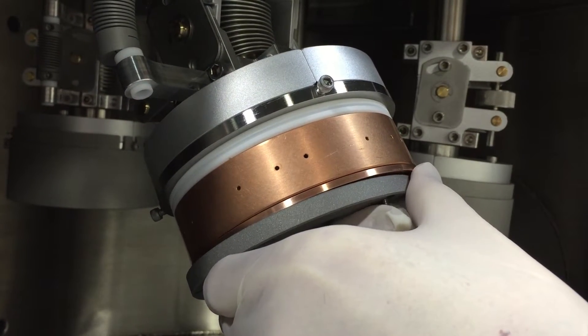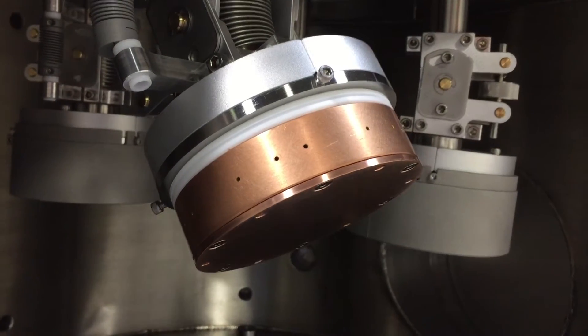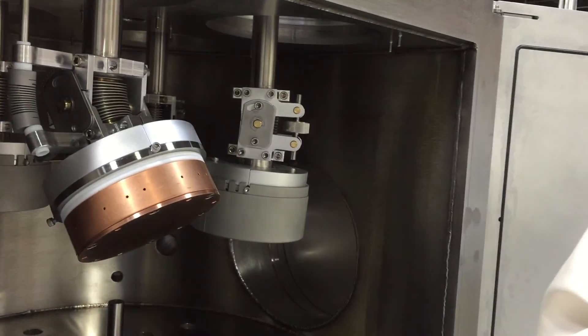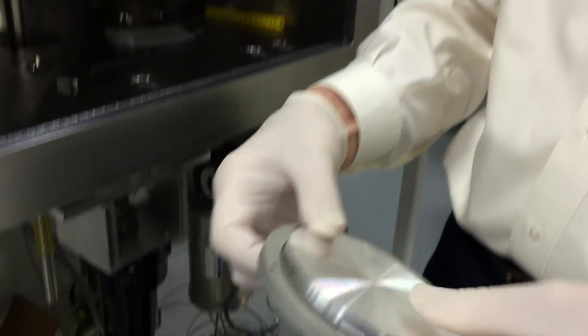Once all of the screws have been removed, pull the target retainer down and the target assembly will come with it. It's a simple process to replace the target by just reversing the steps we just did.